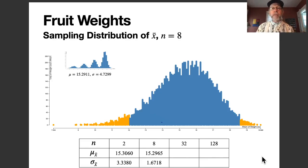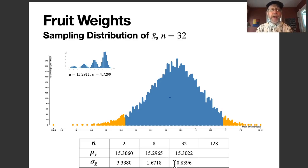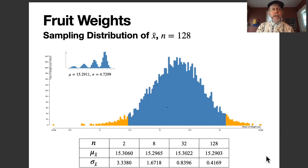Let's quadruple the sample size again to samples of size 32. The sampling distribution is even more normal, the sample mean is again very close to 15.29, and the standard deviation has again basically halved from about 1.67 to about 0.84. Quadrupling once more to samples of size 128 confirms the same pattern — mean around 15.3 and the standard deviation cut in half again.